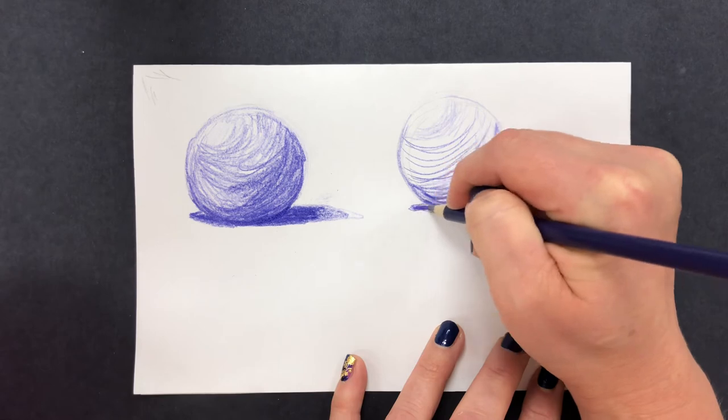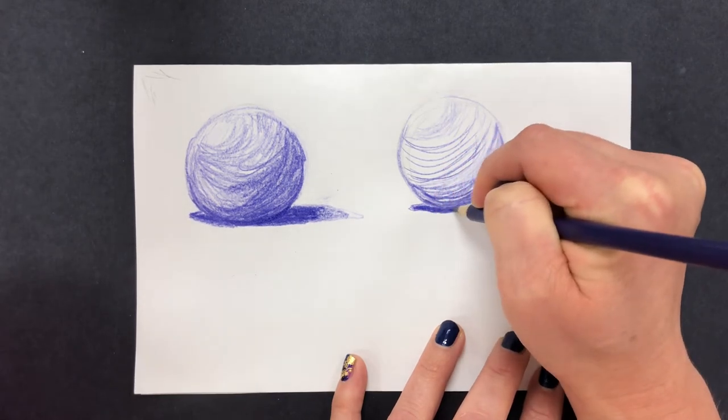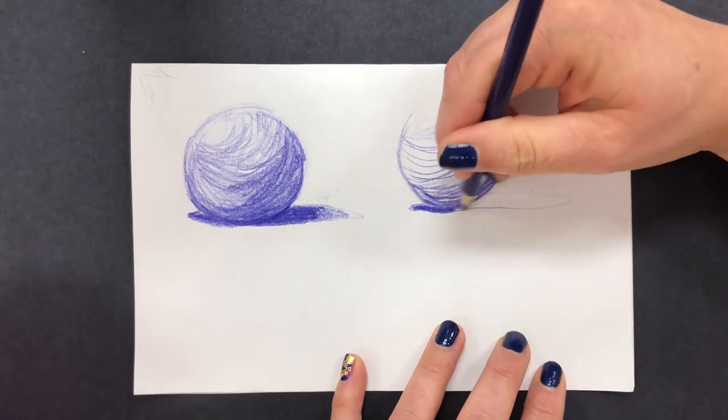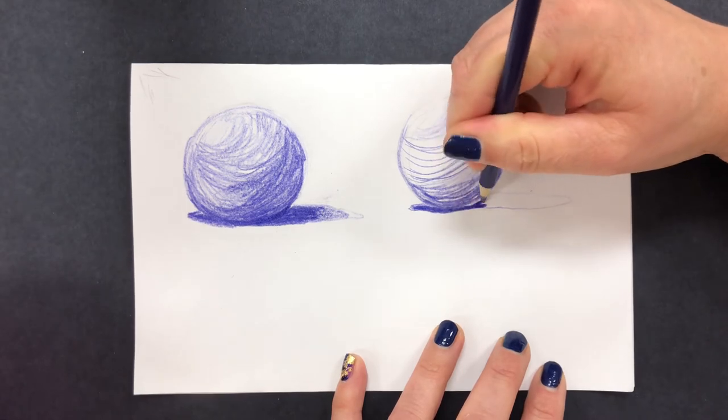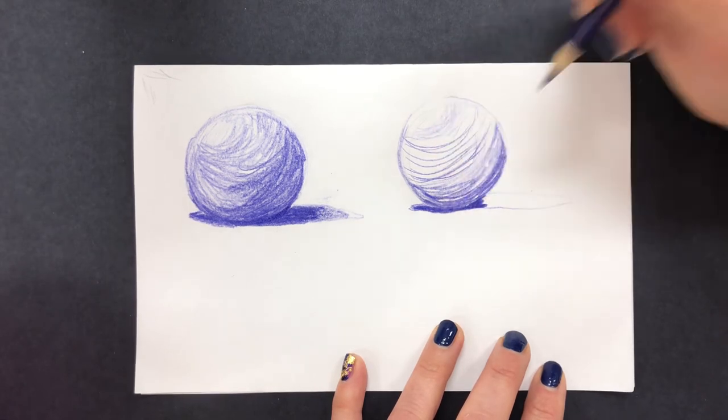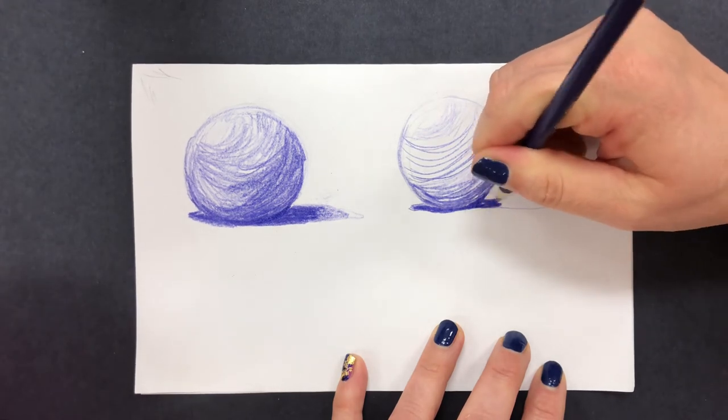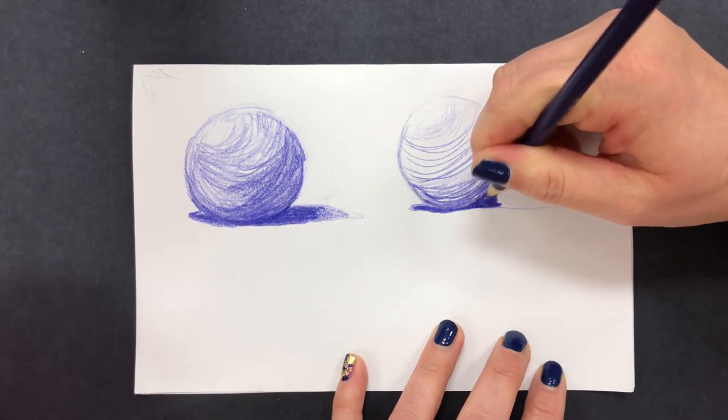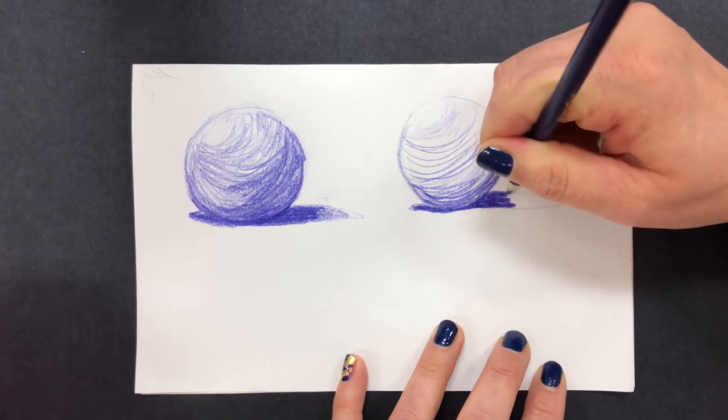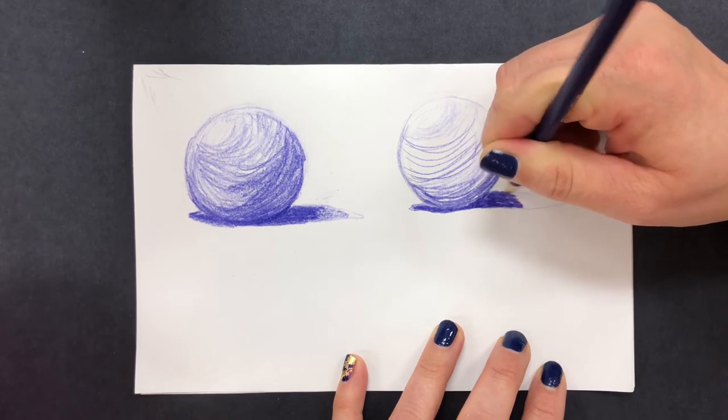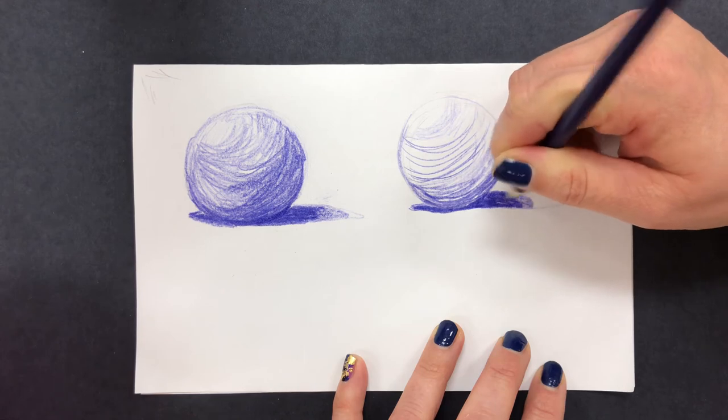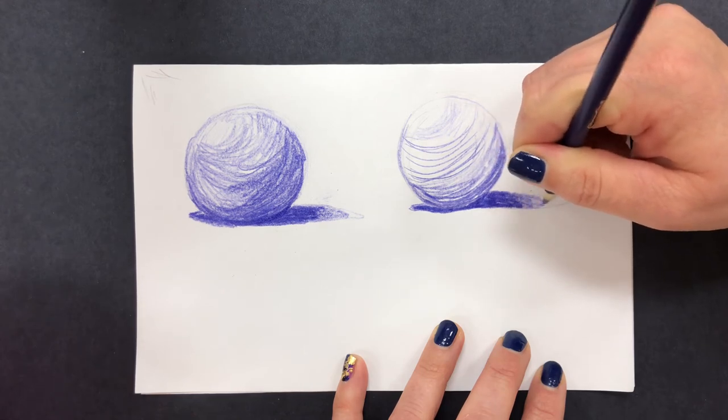I'm going to come in here and add this little cast shadow underneath and I'm pressing really hard. I find it helpful to have another piece of paper underneath my paper so that I can really press hard. As the shadow moves away from the object it will start to lighten up too.